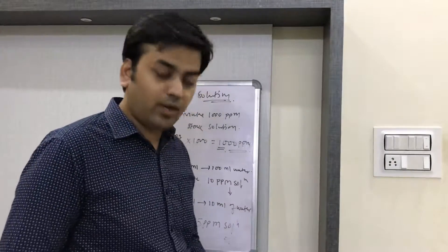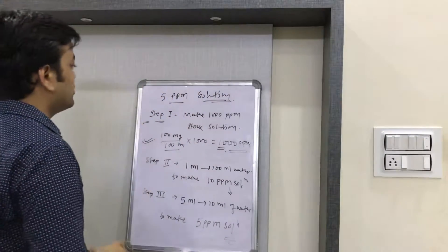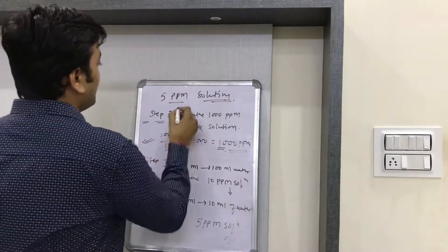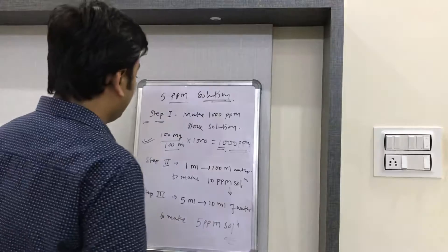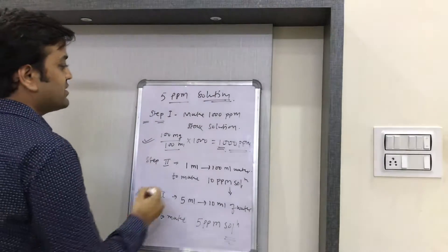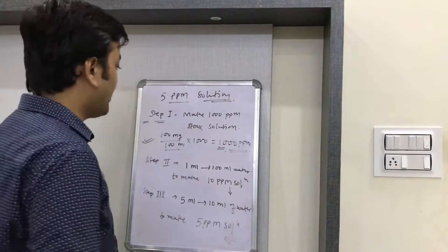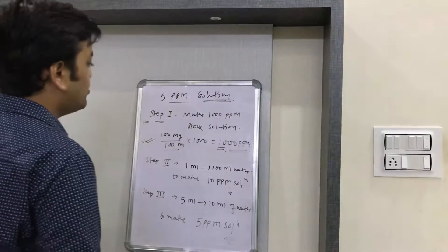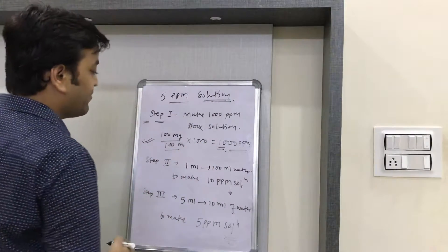Hello everyone, today we will talk about how to prepare a 5 ppm solution. The preparation of a 5 ppm solution will follow three steps. The first step is to make a 1000 ppm stock solution.